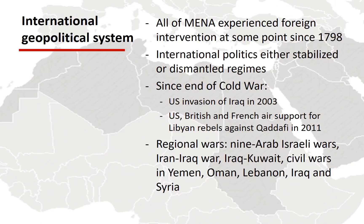Depending on how their interests go, international powers can either stabilize or dismantle regimes. Egypt, for example, was very capable of navigating power struggles to its own advantage during the Cold War, while Iran was not as successful. Since the end of the Cold War, the US has really become the major player in the Middle East, taking over from Britain — particularly with the invasion of Iraq in 2003.